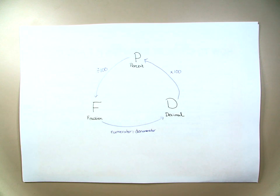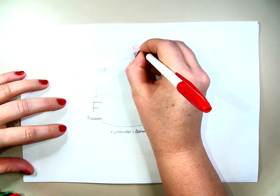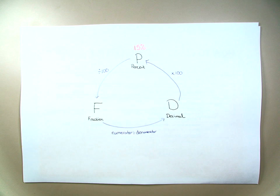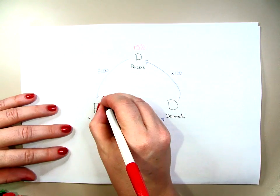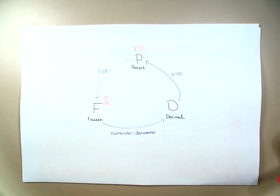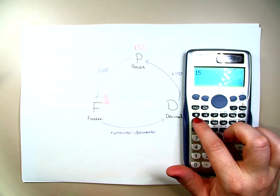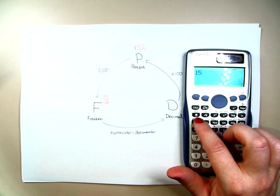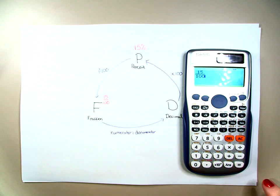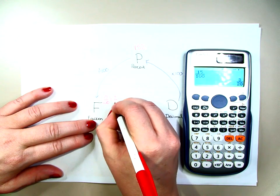Let's try a quick problem. We're going to look at simplifying 15%. To make it into a fraction, you divide by 100, so we put 15 over 100. Now this can be simplified further, and in order to do this, you need to use your calculator. We're going to enter 15, then hit the fraction button, which immediately makes this into 15 over 100. When you hit equals, the answer will naturally be in a fraction — so 15 over 100 equals 3 over 20.